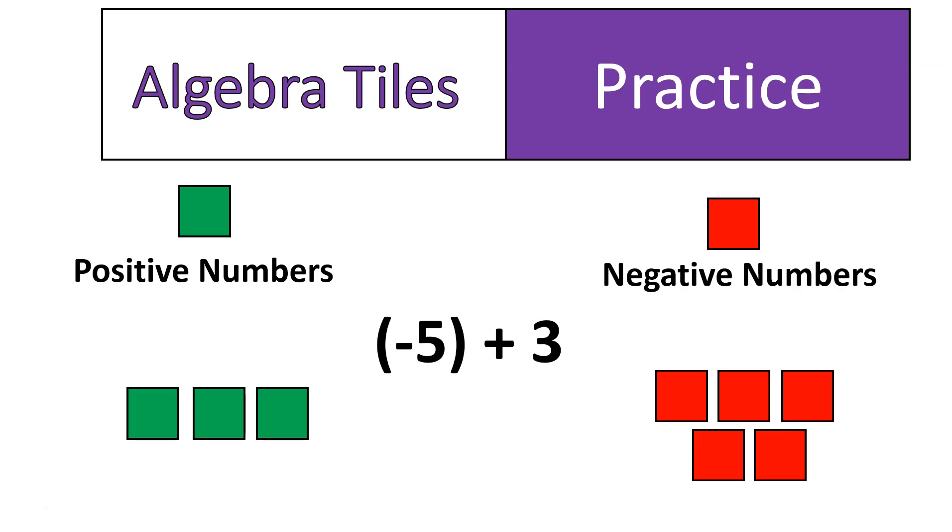Notice my negative numbers are still red. My positive numbers are still green. I put them on opposite sides. It doesn't matter because I'm going to start checking them off now. So I'm going to check off one positive for every negative, one positive for every negative, one positive for every negative. There we go. And what I'm left with this time is negative two.